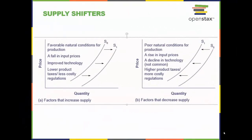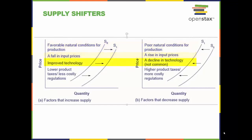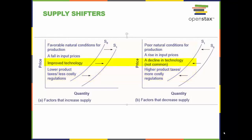Here are two lists of factors that either increase or decrease supply. These factors include natural conditions, input prices, technology, and taxes and regulation.